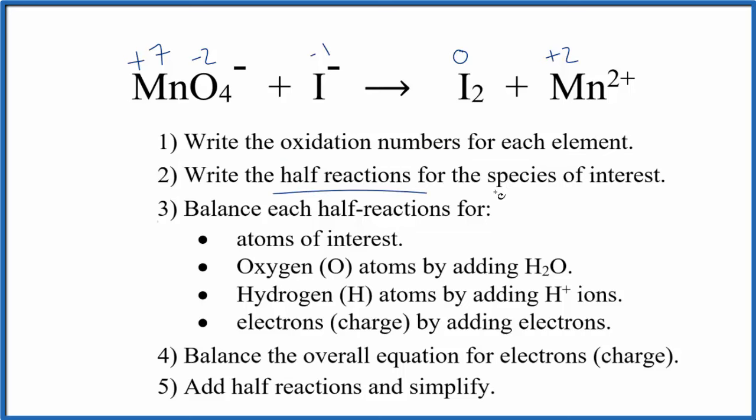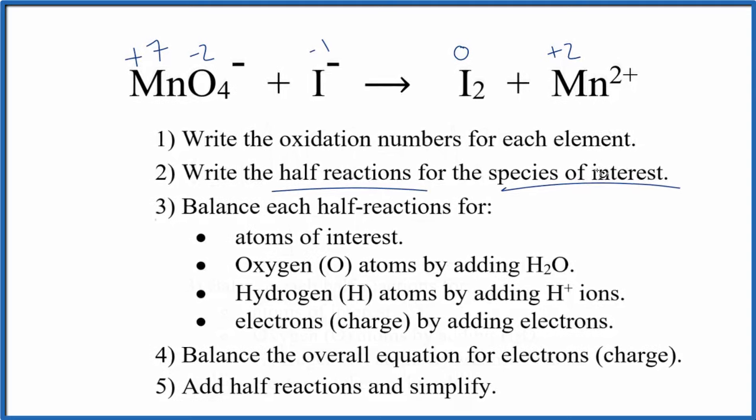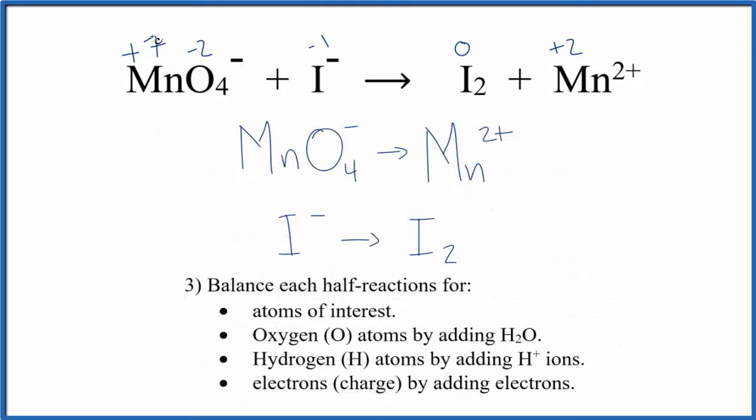Next we want to write the half reactions for the species of interest. These are the ones whose oxidation states have changed. That'll look like this. So we can see the manganese went from plus seven to plus two. This number got smaller. That's being reduced. The iodine went from negative one to zero. Zero is larger than negative one. This is our oxidation half reaction.